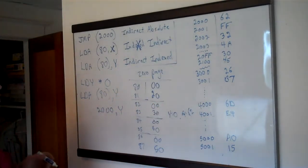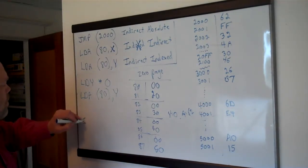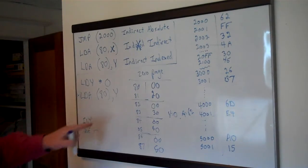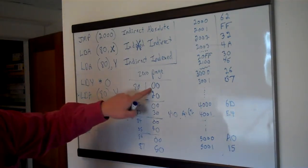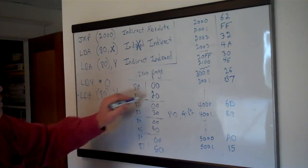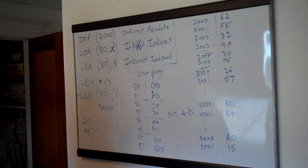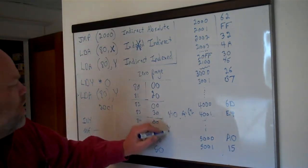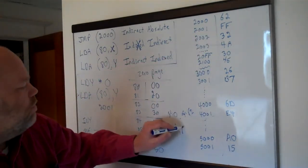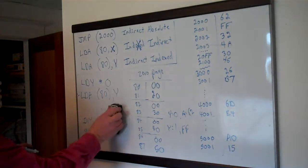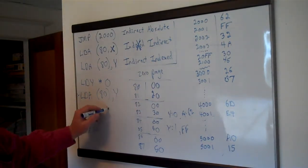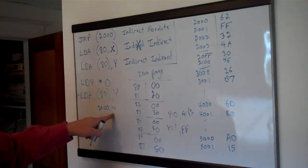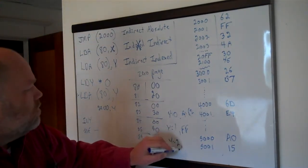Now we still need to index by Y, so internally in the processor this becomes load A from 2000,Y. Y is zero, so it loads A from 2000. If Y equals 0, A equals 62 — same first result. But now let's say we increment Y and branch if not equal. Y is now 1. The indirect part still gives us 2000, but now Y is 1, so this becomes load A from 2001, and so A equals FF. When Y is 2, it loads from 2002 and gets 32.